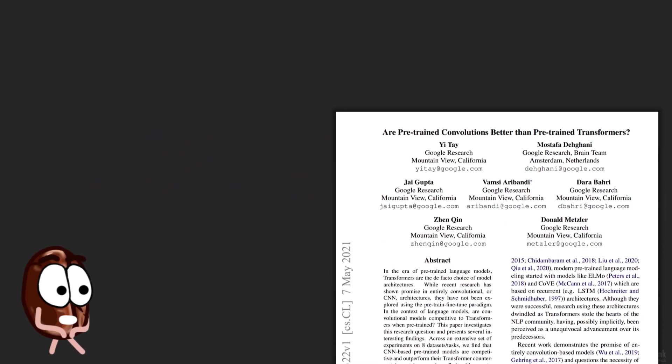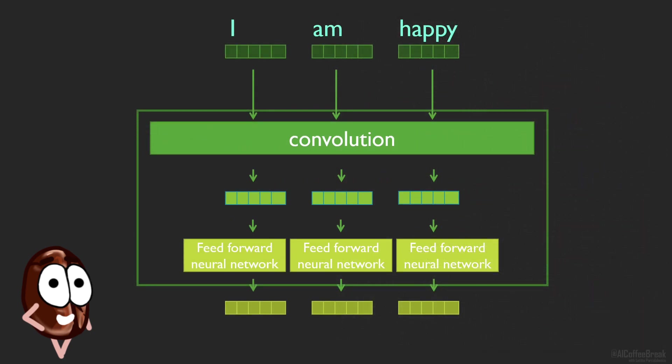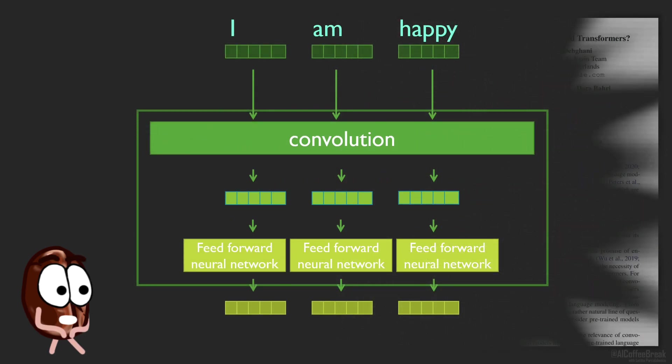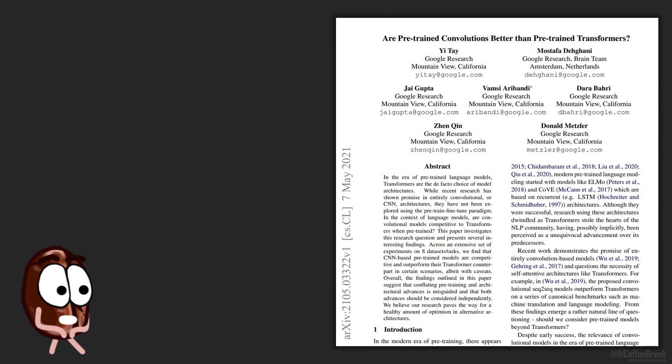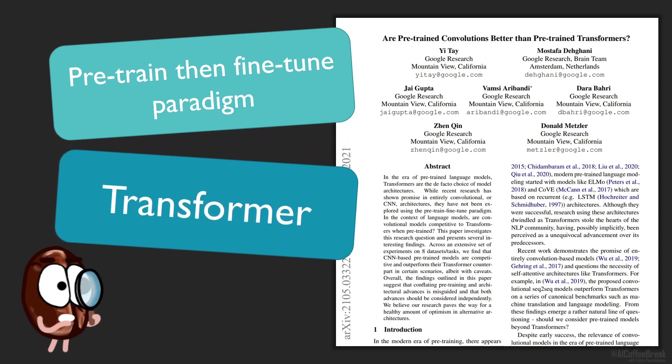This paper asks: what if convolutional architectures can actually perform on par with transformers, but this hypothesis was mostly neglected and untested since transformers took all the attention? What if both the pre-training and the architectural advances happened simultaneously with the transformer, but that doesn't mean these two factors shouldn't be separated and analyzed independently?